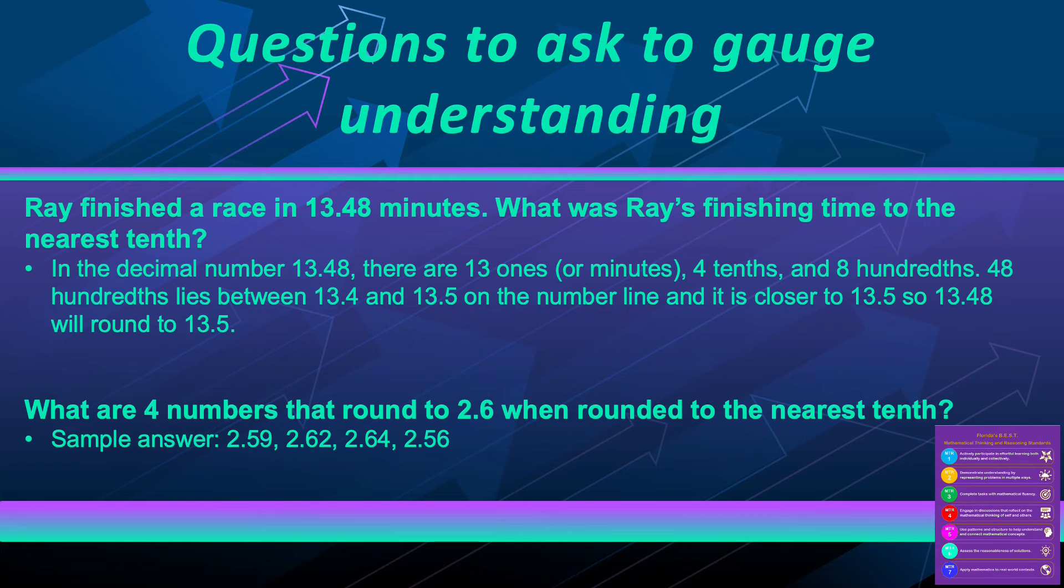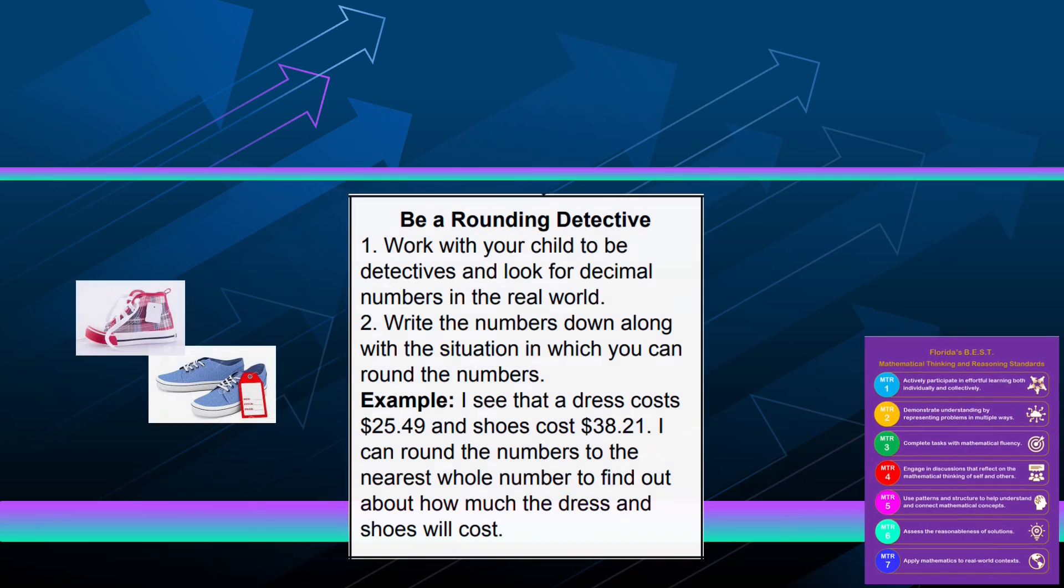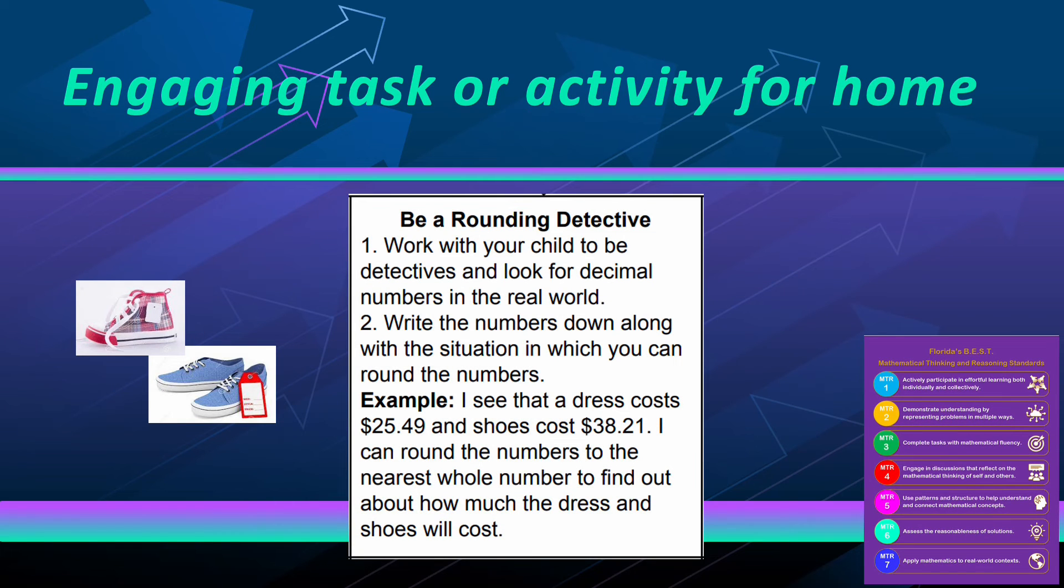Here is an activity from the STEMscopes parent letter that is meant to be an engaging way that students can continue their learning at home. This activity will connect rounding to the real world, which shows MTR 7, since students are asked to find decimal numbers when they are out and about and think about when they would want to round those numbers.